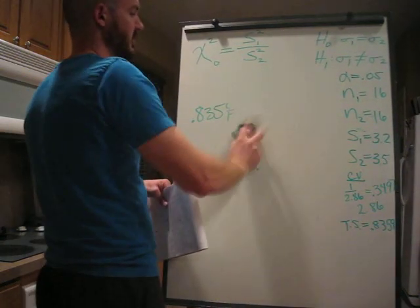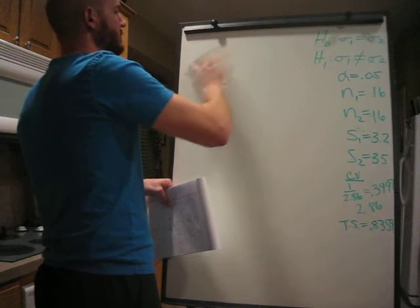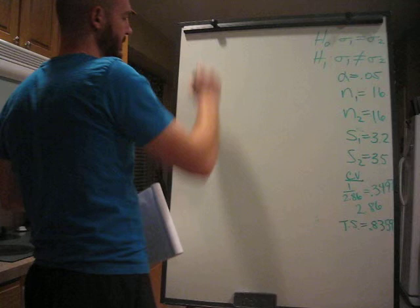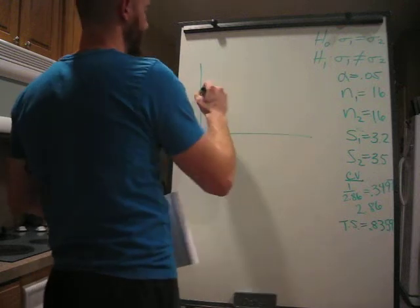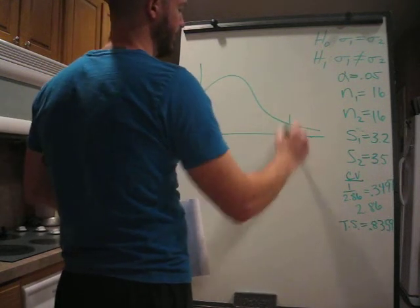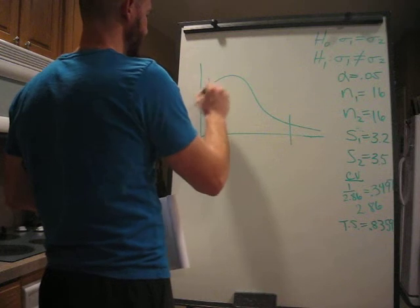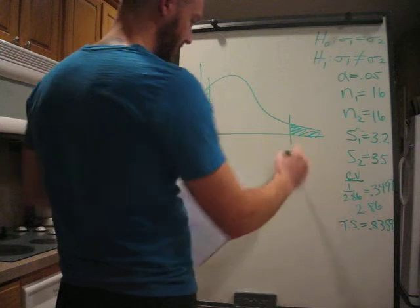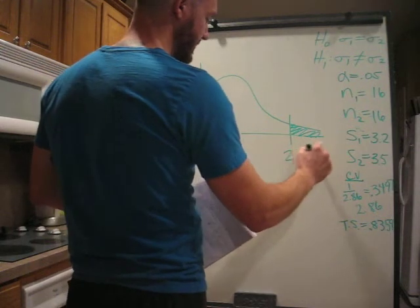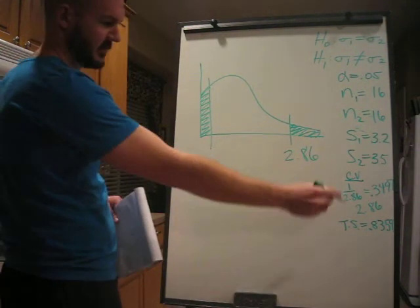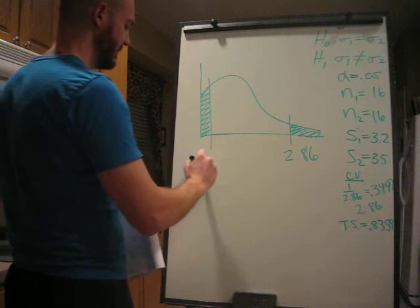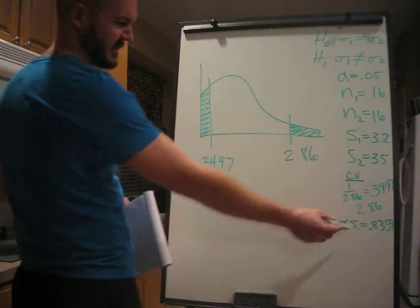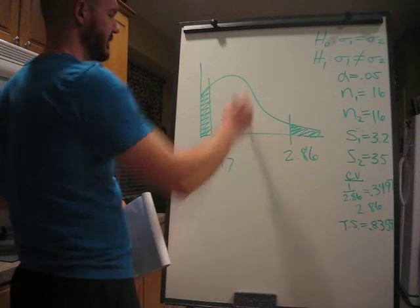Alright. So we just got left to draw our curve. And chi-square, something to that effect. Two-tailed. And we got 2.86 critical value on the right. Critical value on the left, .3497. And test statistic .8359 falls somewhere in the middle.